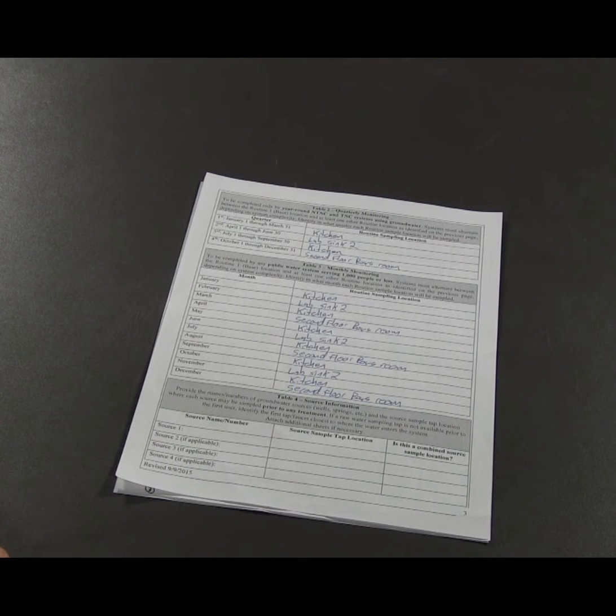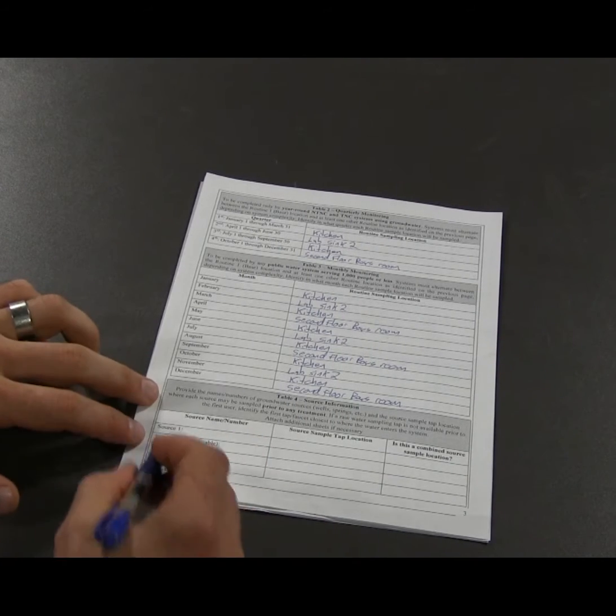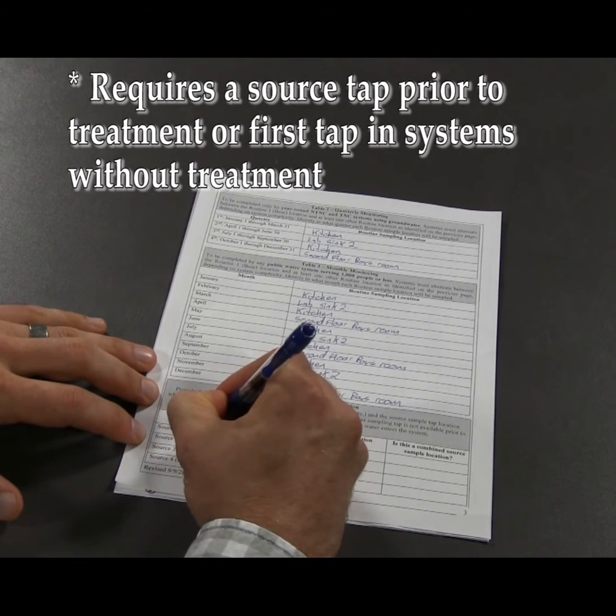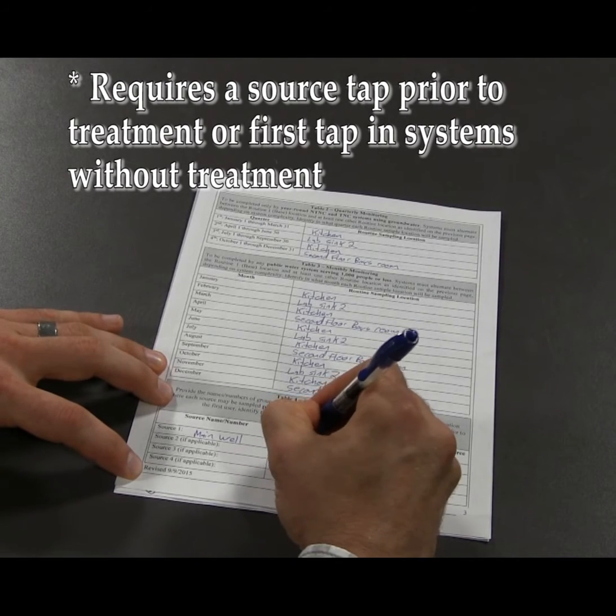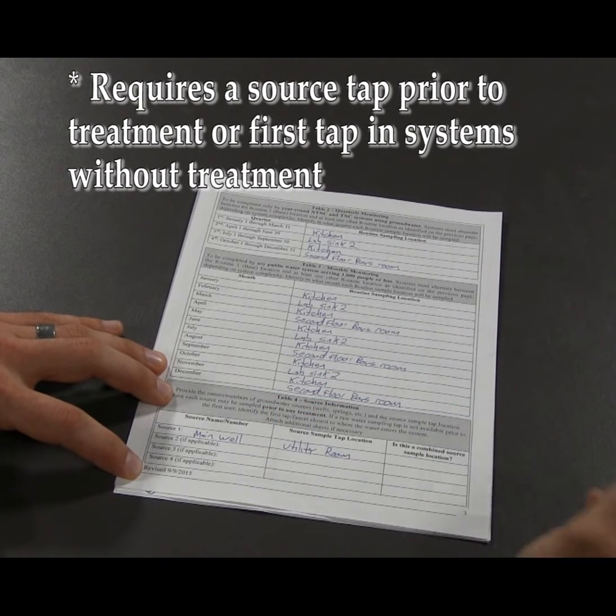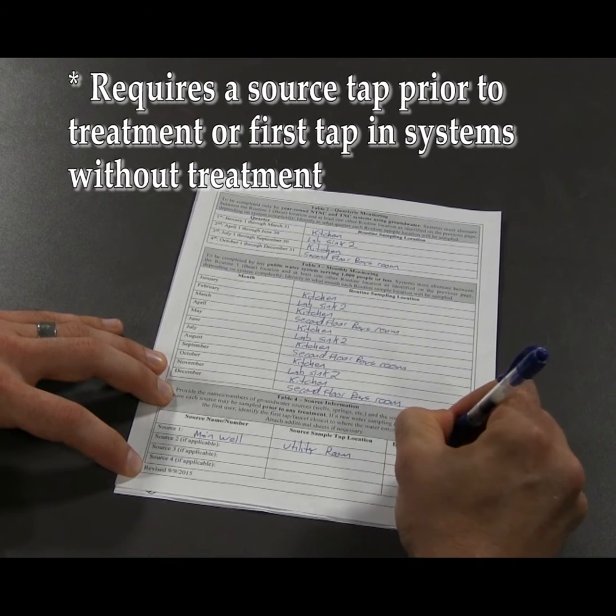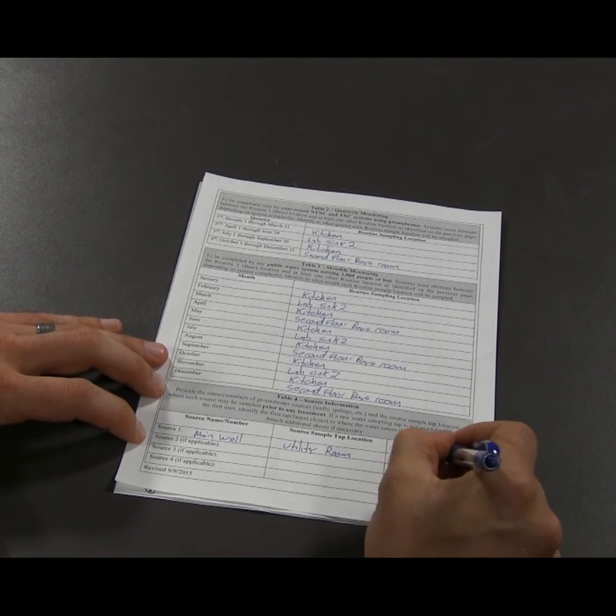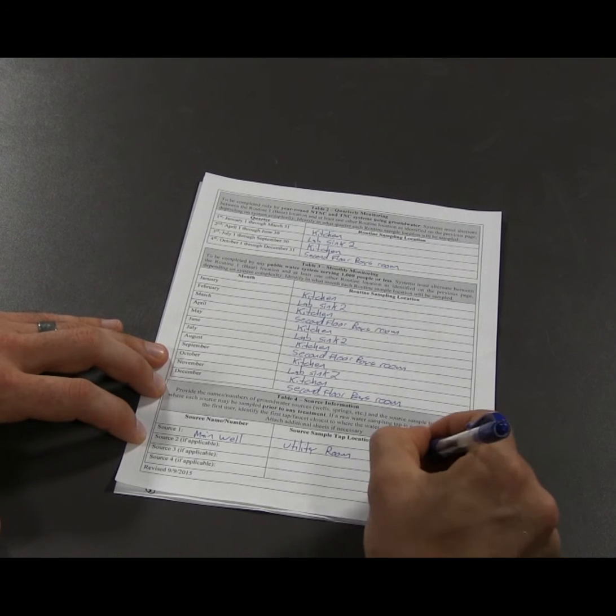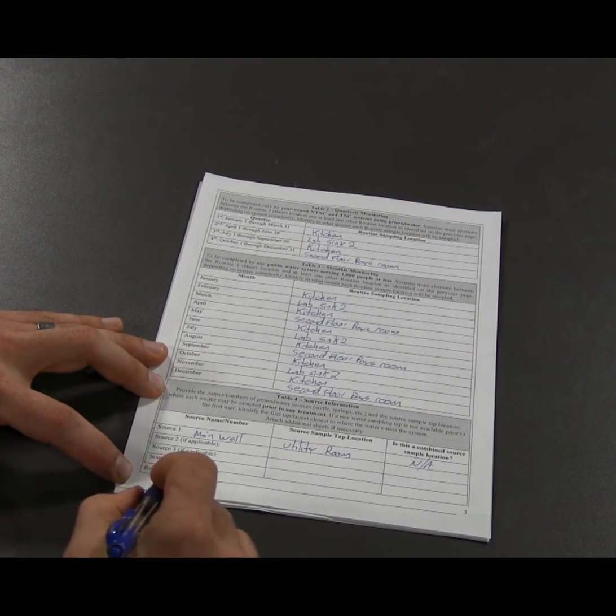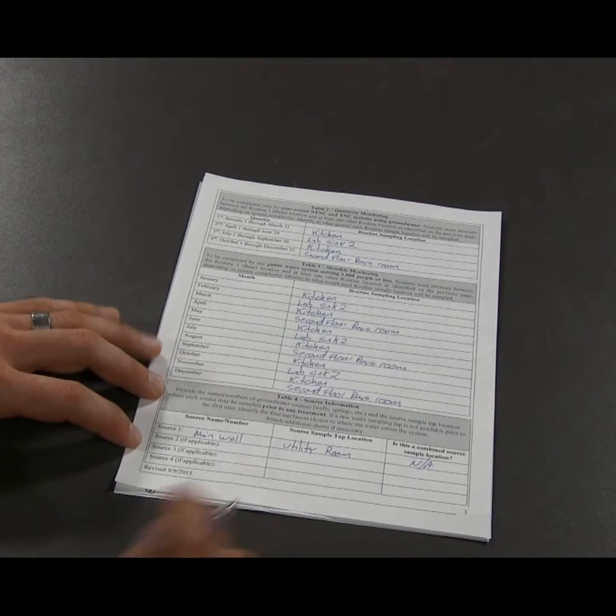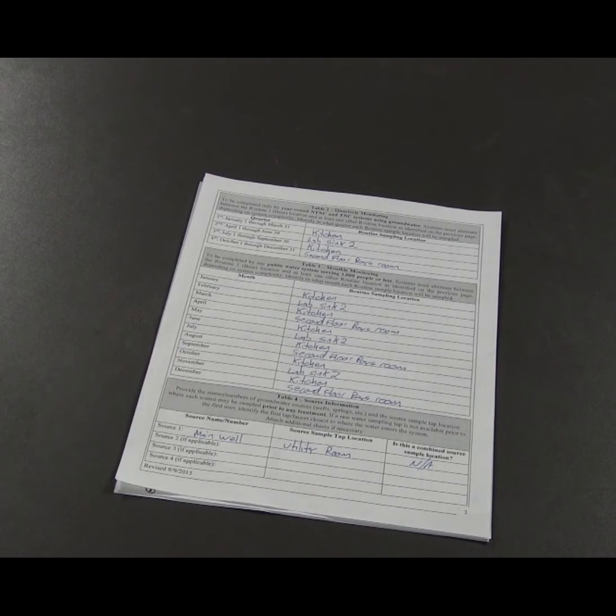Now we look to table four. If the system is served by groundwater or any mixture of groundwater and surface water, we need to identify where you can take source water samples. So there's only one well, so we just call it the main well. Source sampling tap location is in the utility room. And then it asks if it's a combined source sample. There's only one well, so you can just put not applicable. If there's multiple wells and you can take one sample to represent multiple wells, you would write yes, depending on the number of wells you can sample. If you have more sources, feel free to either write below or add another piece of paper onto the bottom in order to capture all of your wells.